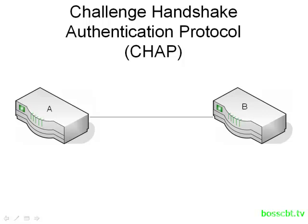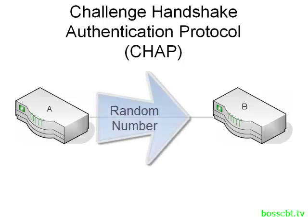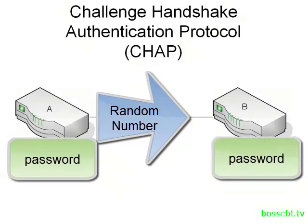CHAP, which stands for Challenge Handshake Authentication Protocol, is the preferred method for authentication with PPP. It's a little more complicated but it's more secure. Let's say router A wants to authenticate router B — it sends a random value over to router B. Router B is configured with a password, and that identical password is also configured on router A.